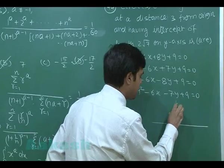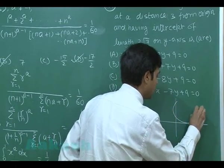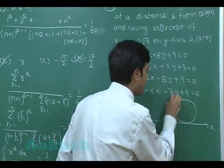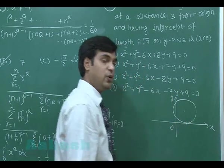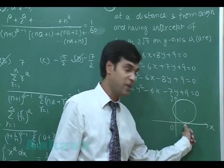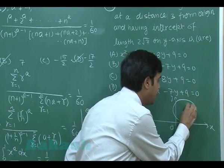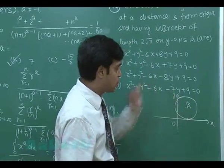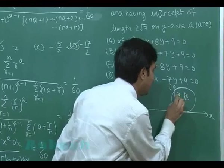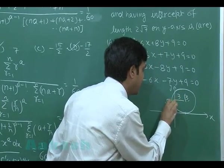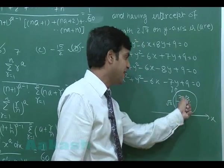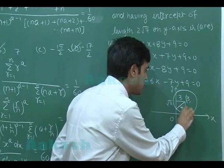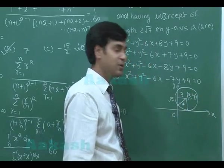Drawing a circle with the center shown: the x-axis, y-axis, and origin are marked. The circle is touching at a distance of 3 units on the positive side, so the touch point is (3, 0), meaning the x-coordinate of the center is 3. The y-intercept is 2√7, so when the perpendicular is drawn the half-intercept is √7, giving radius = √(9 + 7) = √16 = 4. So the center is (3, 4).